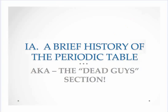We are studying the atom right now. In this unit we're going to give you an introduction, and then in the next unit we'll get into the models that have been developed to help us understand the atom. We're going to start with a very brief — and I mean brief — history of the periodic table. I like to do this because it gives you an indication of how ideas are floated out into the scientific community and then altered over time as new experiments are done.